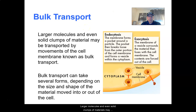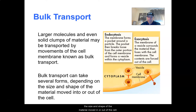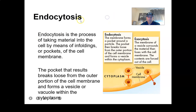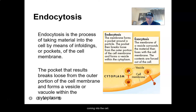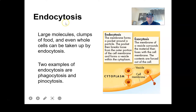Bulk transport: larger molecules and even solid clumps of materials may be transported by movements of the cell membrane known as bulk transport. Bulk transport can take several forms depending on the size and shape of the material moved in or out of the cell. Endocytosis is the process of taking materials into the cell by means of infolding or pockets of the cell membrane. Here we've got endocytosis — something is coming into the cell, and as you can see, there's a little gap in the cell membrane. The cell membrane is actually making a vesicle around the molecule or substance coming in. That pocket breaks loose from the outer portion of the cell membrane and forms a vesicle or vacuole within the cytoplasm.